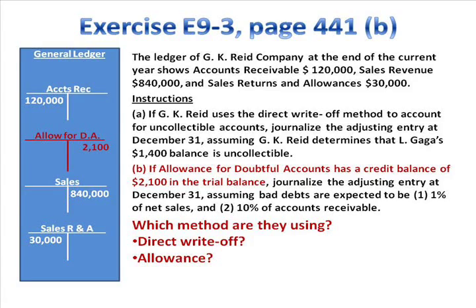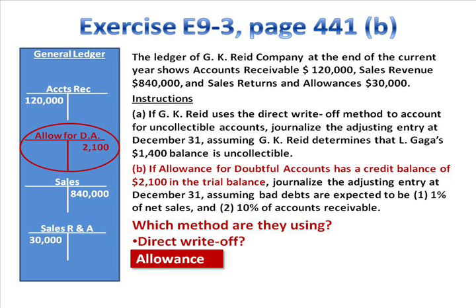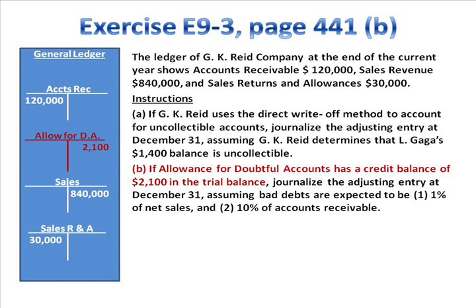In letter B, before we can do anything, we need to decide which method we're using. The problem started with letter A suggesting the direct write-off method, but in letter B it says we have an allowance account. If we have an allowance account, we must be using the allowance method — there's no such thing as an allowance account under the direct write-off method. It says the allowance for doubtful accounts had a credit balance of $2,100. On the left side of the screen I've got general ledger accounts represented for all the facts in the problem, and we're adding the allowance account with a credit balance of $2,100.